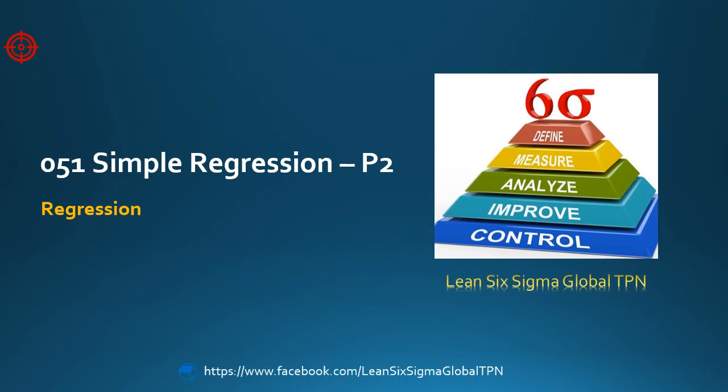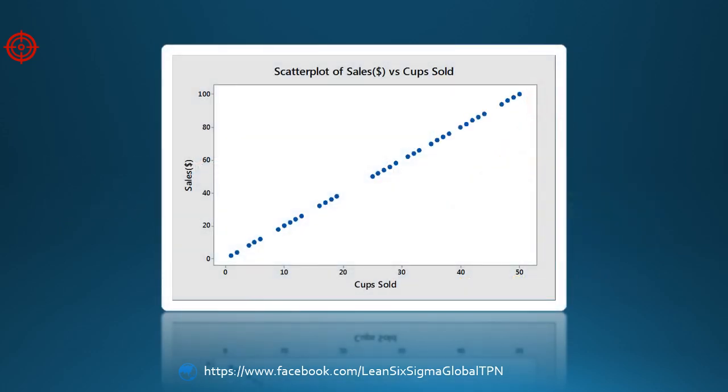Let's talk about regression. In the previous lesson, we looked at the coffee shop to understand the relationship between the number of cups sold and coffee sales. This is a special case in which the relationship between variables is perfectly linear.